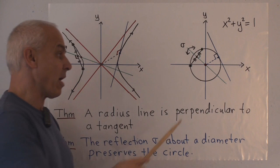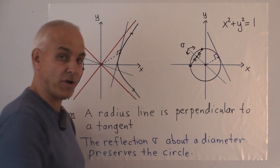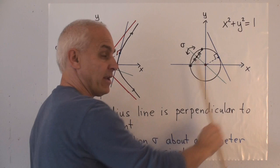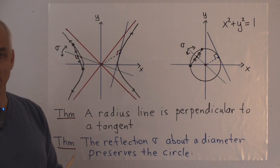Now, one of the basic properties of a circle is that if you take a radius from the center to any point on the circle, then that radius line is perpendicular to the tangent at that external point.